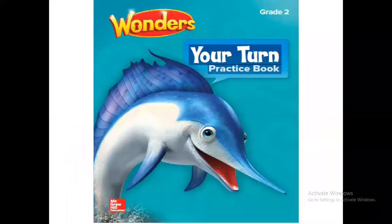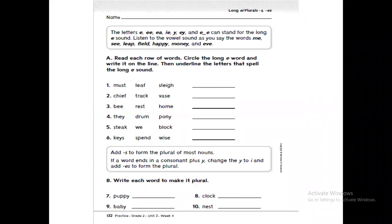Now get your turn practice book. Open page number 132. Let's see: 'e', double 'e', 'ea', 'ie', 'y', 'ey', and 'e'. And the magic 'e' or final 'e' can stand for the long 'e' sound. Listen to the vowel sound as you say the words. Now read each row of words, circle the long 'e' word and write it on the line, then underline the letters that spell the long 'e' sound.